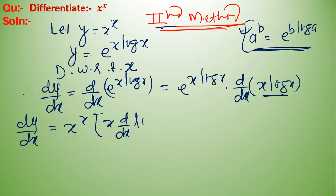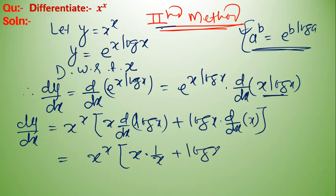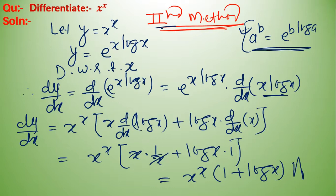So dy upon dx equals x to the power x, and we use the product rule: x into derivative of log x plus log x into derivative of x. This equals x to the power x times x into 1 upon x plus log x into 1. Here x and x cancel, giving x to the power x into (1 plus log x), which is our required answer.